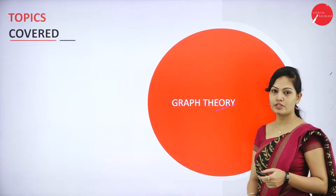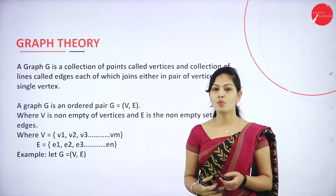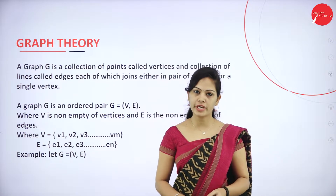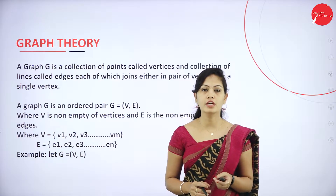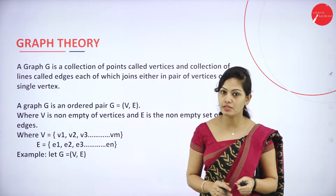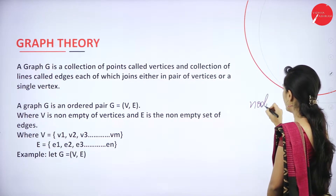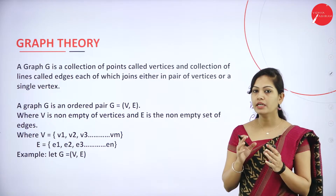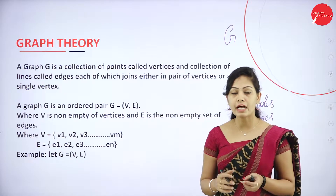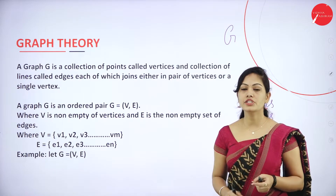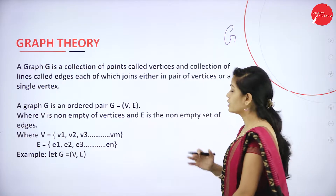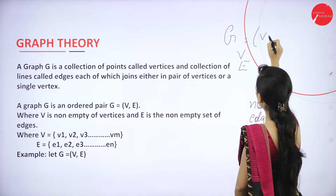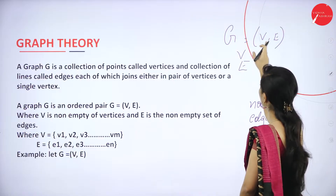Today I will discuss graph theory concepts in unit 4. What is a graph? A graph is a collection of points. In mathematics, a graph is an important computational tool. Graph values are called nodes and their connections are called edges. A graph can be represented by the symbol G. G equals (V, E), where V stands for vertices and E stands for edges.